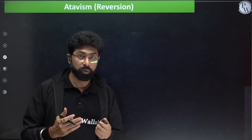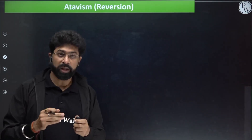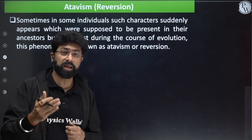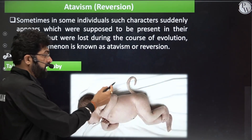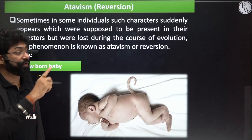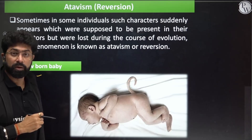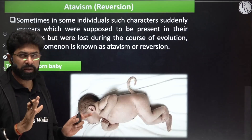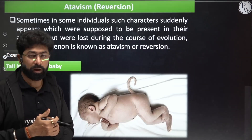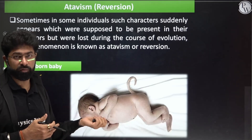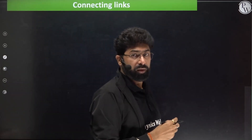Atavism is another important evidence for evolution — it occurs when ancestral characters suddenly appear in an individual. Presence of a tail in a newborn baby is a perfect example of atavism, meaning an ancestral character has reappeared. It can be surgically removed. Cases of complete body hair coverage are also examples of atavism — ancestral characters appearing suddenly.